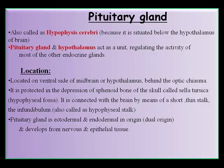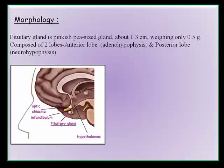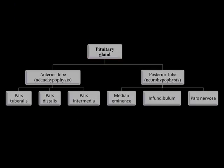The pituitary gland is ectodermal and endodermal in origin (dual origin) and develops from nervous and epithelial tissue. Morphologically, it is a pinkish, pea-sized gland about 1.3 cm, weighing only 0.5 grams, composed of two lobes: the anterior lobe (adenohypophysis) and the posterior lobe (neurohypophysis). The adenohypophysis is made up of pars tuberalis, pars distalis, and pars intermedia. The neurohypophysis is made up of the median eminence, infundibulum, and pars nervosa.